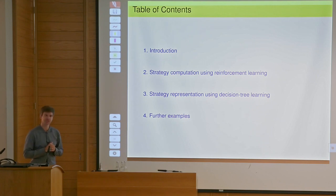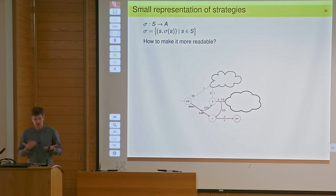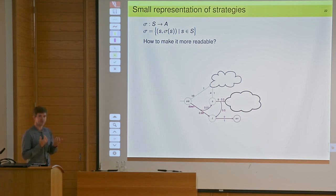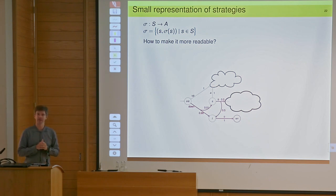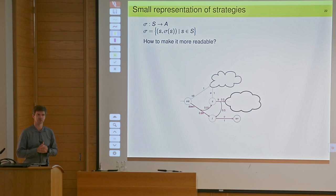Well, why decision trees? What is a strategy? We have seen a strategy is a function telling us what kind of decision to make in each state. So it's a function from states to actions, simplified.